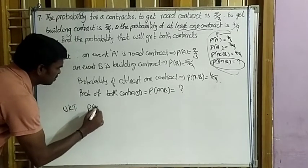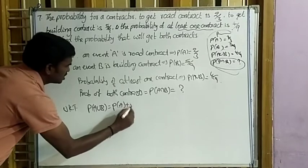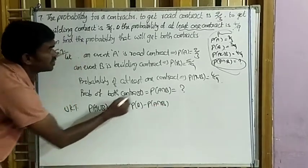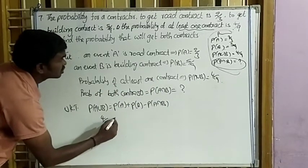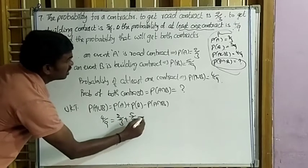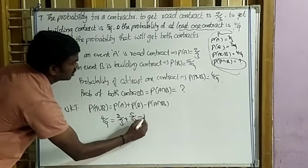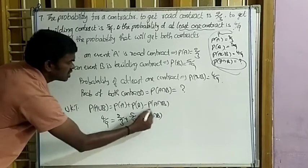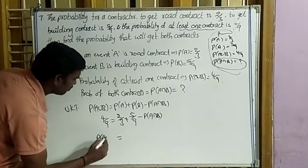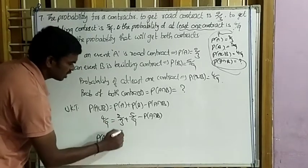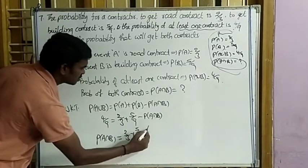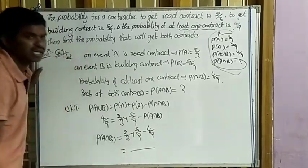The formula is P(A∪B) = P(A) + P(B) − P(A∩B). P(A∪B) = 4/9, P(A) = 2/3, P(B) = 5/9. Since P(A∩B) is unknown, bring it to the left side: P(A∩B) = P(A) + P(B) − P(A∪B) = 2/3 + 5/9 − 4/9.